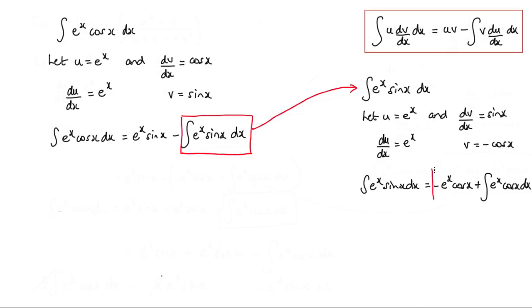So this thing here is the result of integrating this here. So now I need to bring that back and use it over here again. So what we've got is e to the x sin x minus this thing here. So that's minus e to the x cos x plus the integral of e to the x cos x dx.